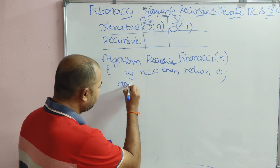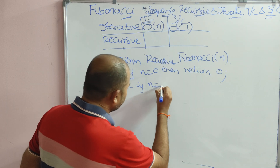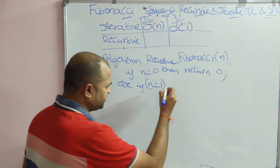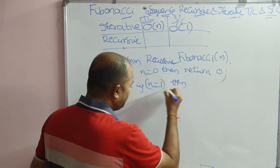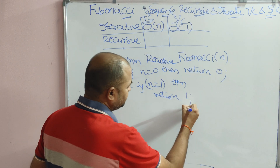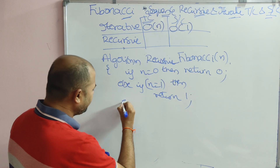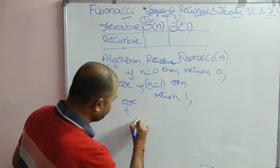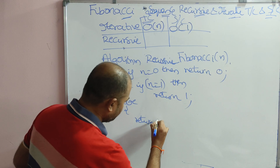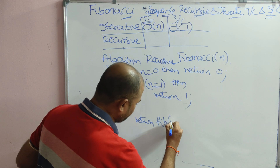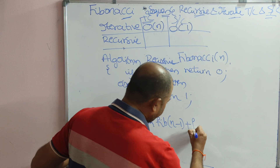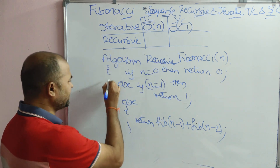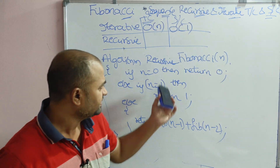Else if n equals 1, return 1. So we handle the base cases 0 and 1. Else, what is the formula? Return Fibonacci(n minus 1) plus Fibonacci(n minus 2), adding the sum of the previous two numbers. This is the recursive algorithm.